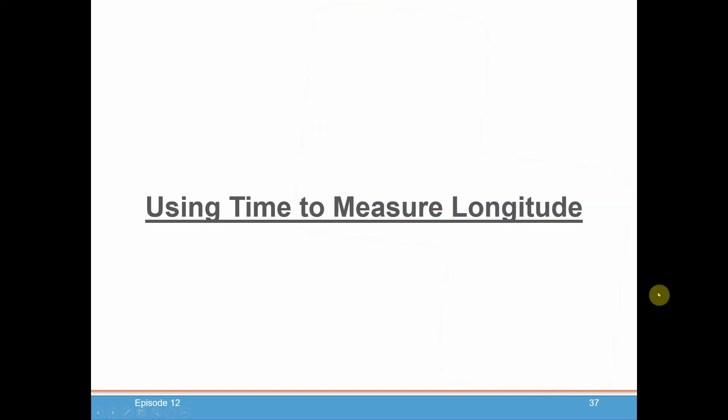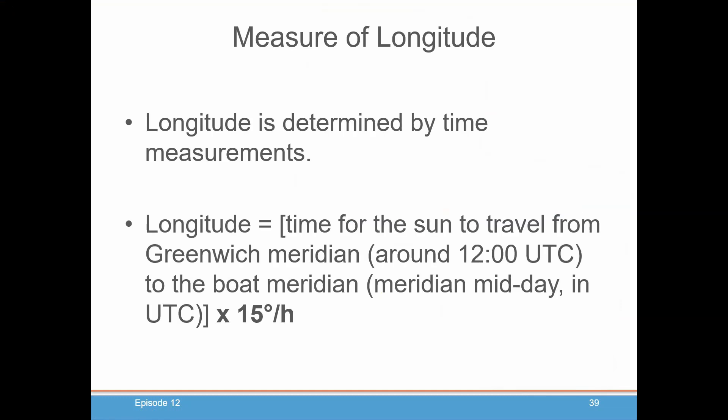In this episode we're going to dive into using time to measure longitude and we're going to get some exercise practice and get you to use your thinking cap a little bit. To review: longitude is determined by time — that is the time for the sun to travel from the Greenwich meridian at 12 o'clock UTC to the boat's meridian at midday, then measure the difference in time by 15 degrees per hour to determine your longitude.